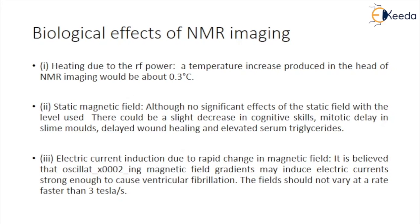Electric current induction due to rapid change in the magnetic field: it is believed that oscillating magnetic field gradients may induce electric currents strong enough to cause ventricular fibrillation. No damage due to NMR exposure has been reported, but it is still suggested that the field should not vary at a rate faster than 3 tesla per second.